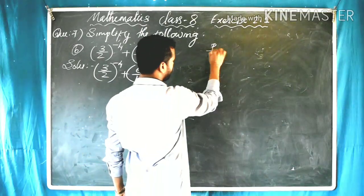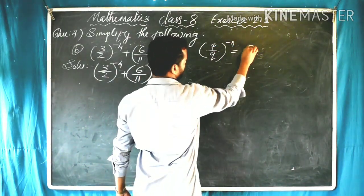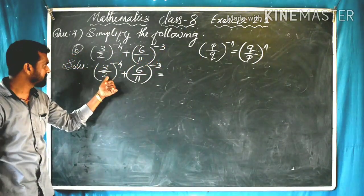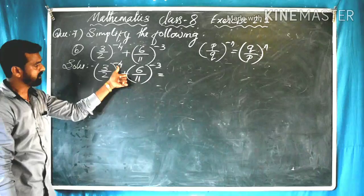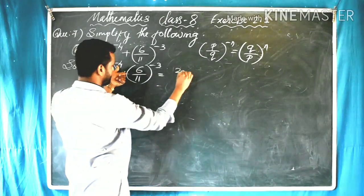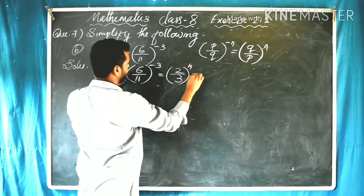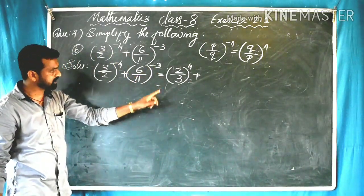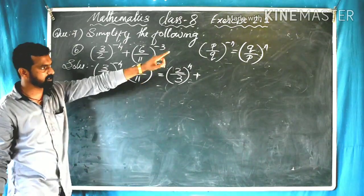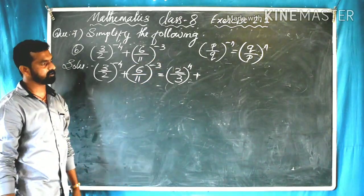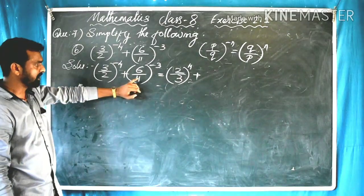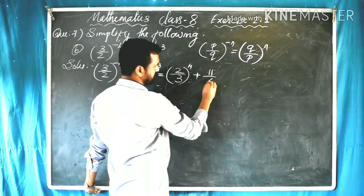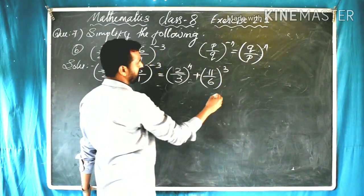Here we use the formula: P by Q raised to minus N is equal to Q by P raised to N. So 3 by 2 raised to minus 4 becomes 2 by 3 raised to 4. Similarly, 6 by 11 raised to minus 3 has a negative exponent, so using the same formula it becomes 11 by 6 raised to 3.